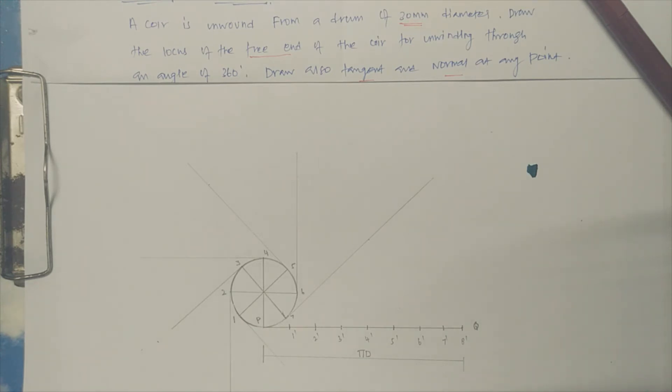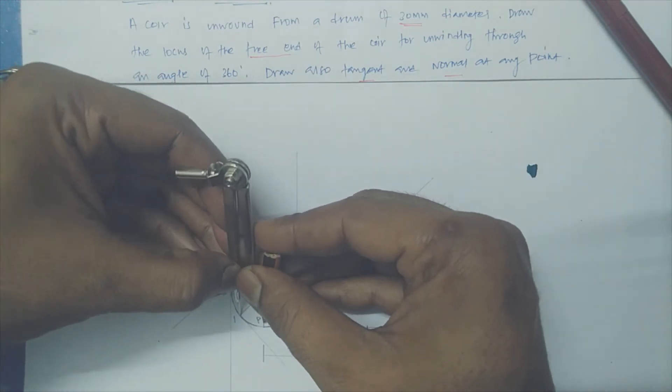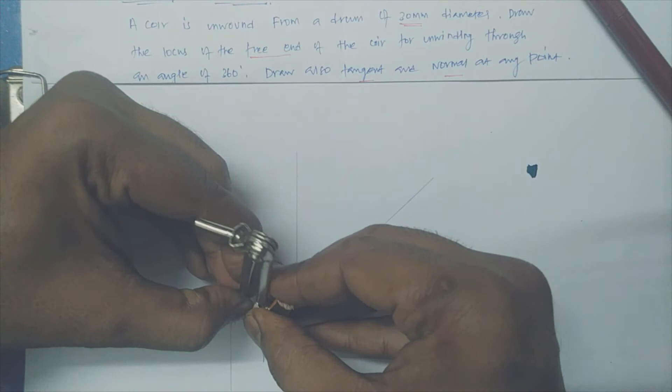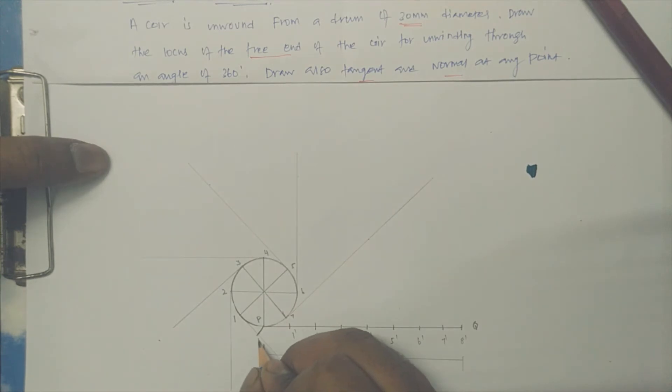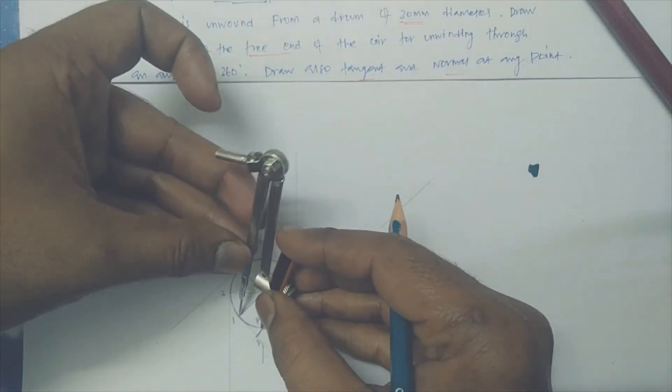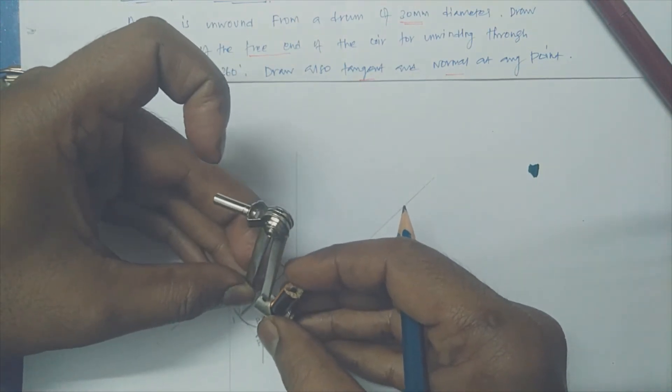Now we know the distance which is measured P to 1 dash or 1 to P. You draw a circular line, so that means at the point you can name that is P1. So first initially I kept 1 as a center, P as a radius, I just mark one small arc.